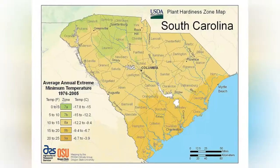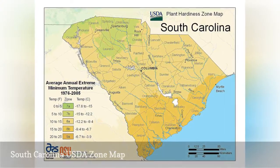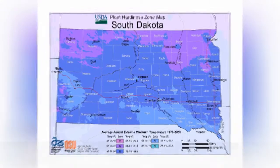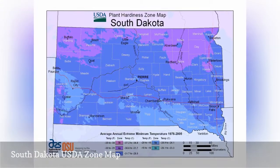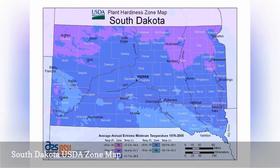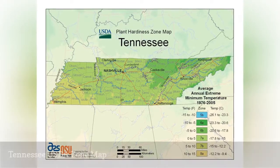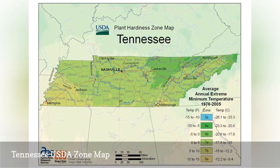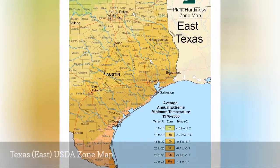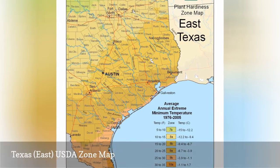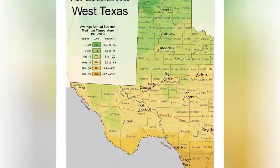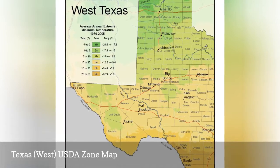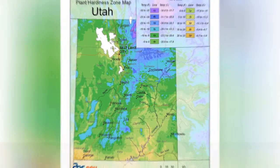USDA zones 7A through 9A are represented in South Carolina. USDA zones 3B through 5B are represented in South Dakota. USDA zones 5B through 8A are represented in Tennessee. USDA zones 7B through 10A are represented in East Texas. USDA zones 6B through 9A are represented in West Texas. USDA zones 4A through 9A are represented in Utah.